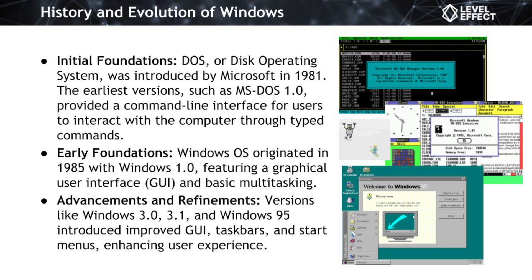Then we roll around to 1985 with the release of Windows 1.0, and this version marked a significant departure from the command line interface. In fact, it was essentially entirely a graphical user interface, or GUI. This started to provide the ability to handle basic multitasking with a lot less requirement for the user to understand and memorize commands and instructions. This was a fundamental shift that paved the way for more user-friendly interactions and what we see today.